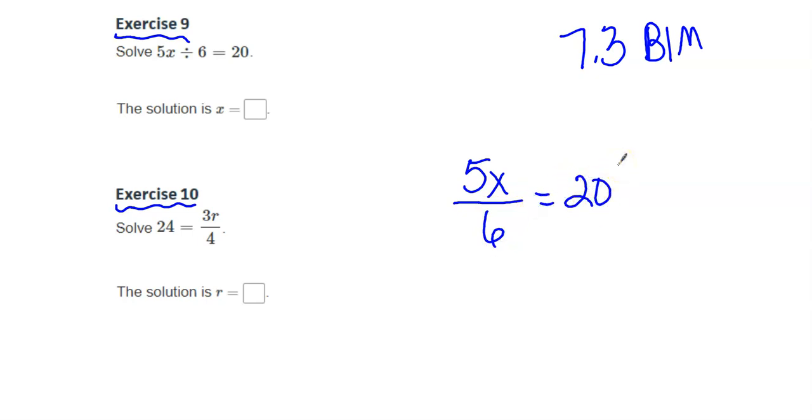Now when I have more than one operation, I usually work PEMDAS backwards, but I'll tell you that multiplication, the 5 is being multiplied by the x, and the 6 is being divided. And because multiplication and division are on the same level of our order of operations, I don't have to do multiplication or division in any order.